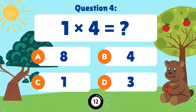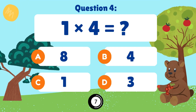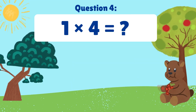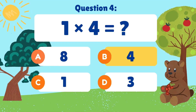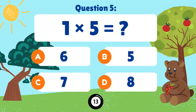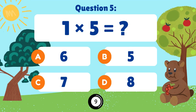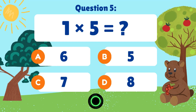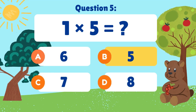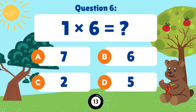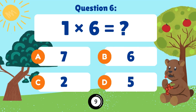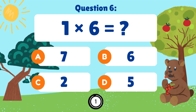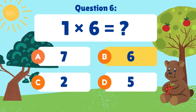1 times 4 is equal to. 1 times 4 is equal to 4. 1 times 5 is equal to. 1 times 5 is equal to 5. 1 times 6 is equal to. 1 times 6 is equal to 6.